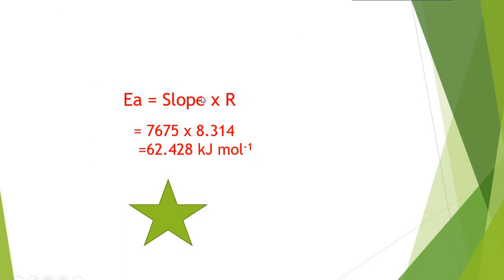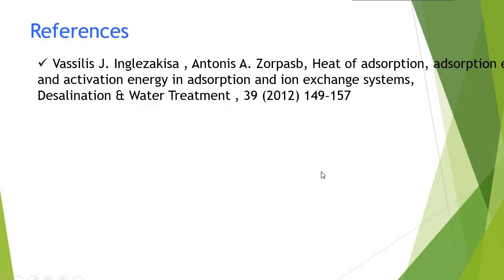Therefore, slope equals minus Ea divided by R. Therefore, Ea equals slope multiplied by R. The negative sign cancels as there are negative signs on both sides. Finally, activation energy is equal to 7675 multiplied by R, which gives 62.42 kJ per mol. This is how we can easily calculate activation energy.